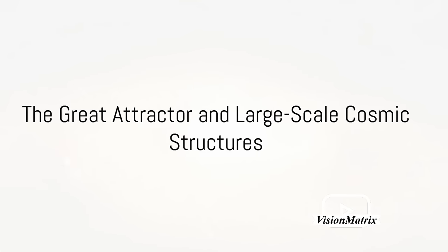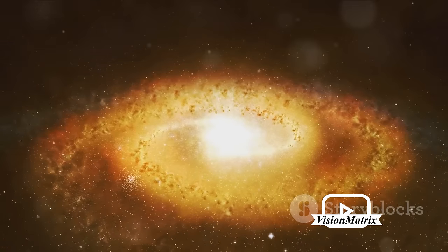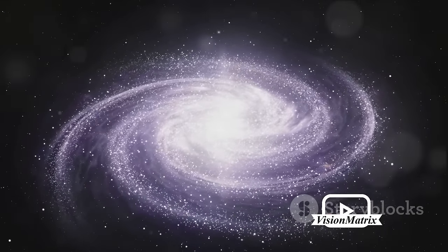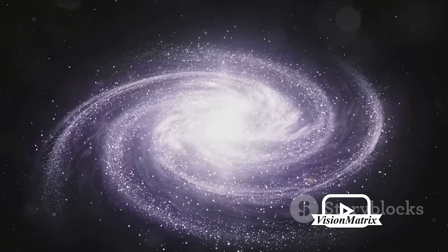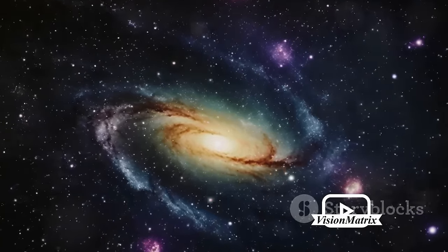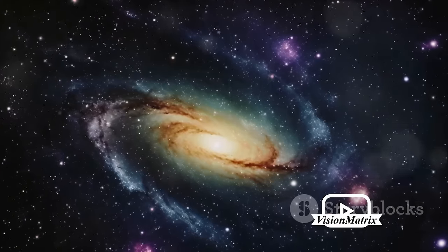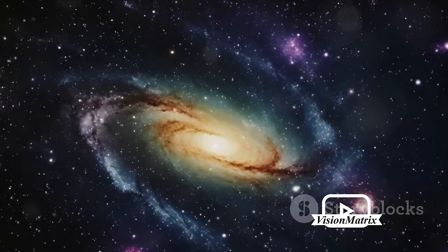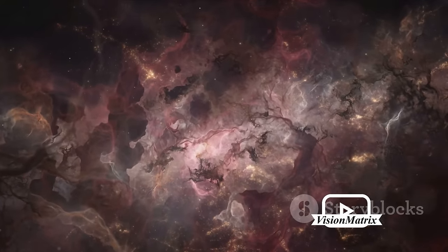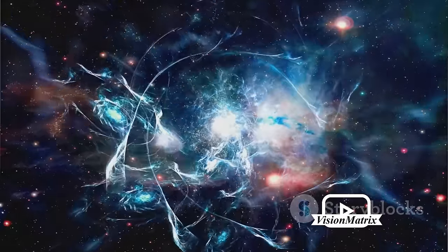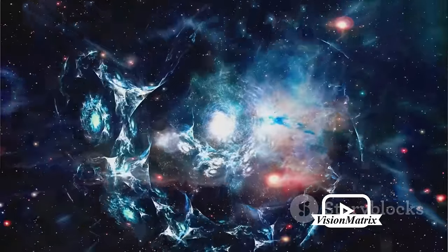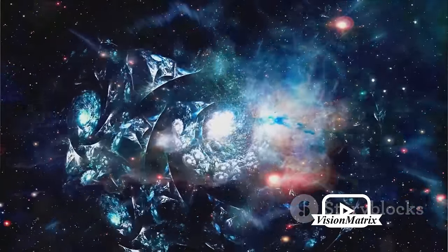Finally, let us journey to the large-scale structures of the universe, including the mysterious great attractor. This gravitational anomaly, situated in the intergalactic void, has been pulling our Milky Way and countless other galaxies towards it for billions of years. Its origin and nature remain one of the greatest puzzles in astronomy. While the great attractor is the most notable, it's not the only large-scale structure of the universe worth mentioning. Galaxy clusters, collections of hundreds to thousands of galaxies bound by gravity dot the cosmic landscape. These clusters often group together to form superclusters, creating a vast cosmic web of matter, dark matter, and energy.